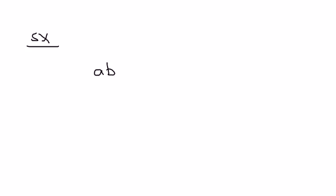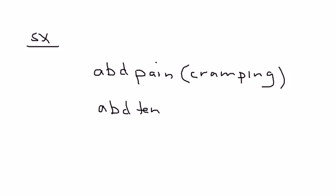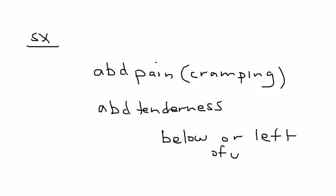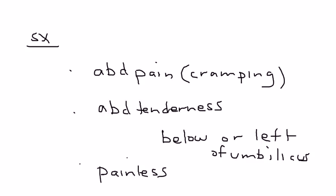Symptoms of Mechal diverticulum, when complications arise, include abdominal pain — often described as cramping — and abdominal tenderness, which is typically located below or slightly to the left of the umbilicus. Another very worrisome but common finding is painless bright red blood per rectum.